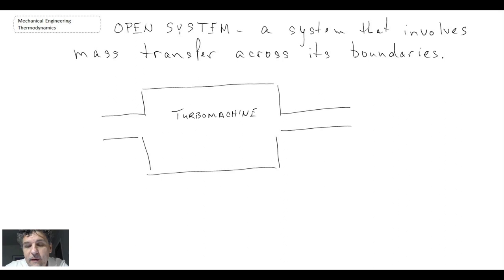Just like with the fixed mass system, we have the boundary. Here we're going to draw another boundary. However, this boundary is a little different, because mass actually can cross that boundary. And we refer to that as being the control surface.